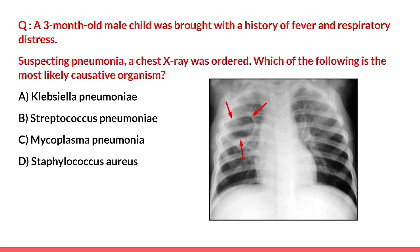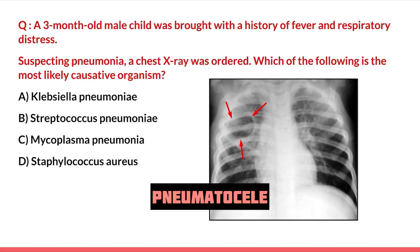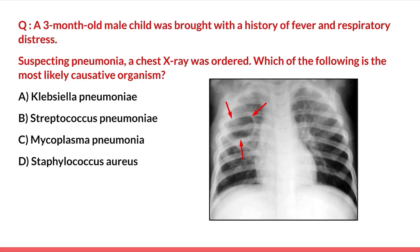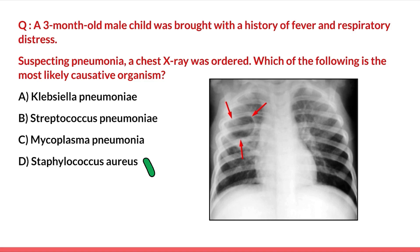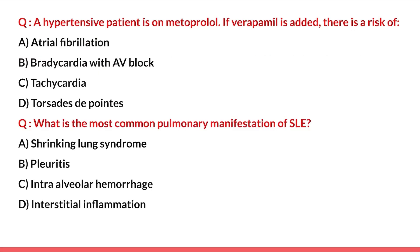A three-month-old male child was brought with fever and respiratory distress. Suspecting pneumonia, a chest X-ray was ordered. Options for most likely causative organism are Klebsiella pneumoniae, Streptococcus pneumoniae, Mycoplasma pneumoniae, and Staphylococcus aureus. On the chest X-ray, a cavity is clearly visible marked by an arrow. This cavity is known as a pneumatocele, which is a characteristic finding of Staphylococcus aureus. Pneumatoceles can also be seen in Klebsiella and Streptococcus, but are most commonly found in Staphylococcus aureus. So the best answer is Staphylococcus aureus.